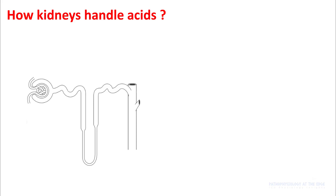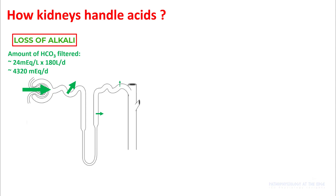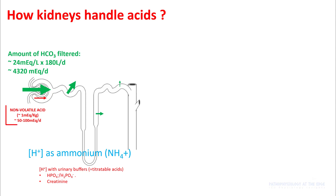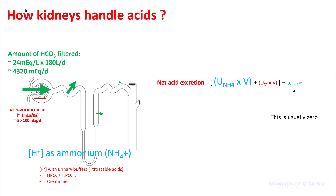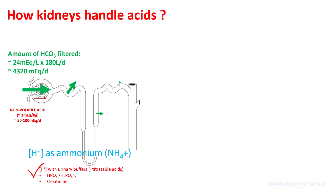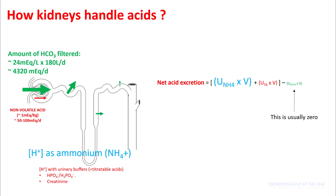Before we do that, let's understand how kidneys handle acid. Normally around 4,000 mL of sodium bicarb is filtered every day and most of it is reabsorbed. You also have around 50 to 100 mEq of non-volatile acid produced in your body that needs to be removed. To get rid of these extra non-volatile acids, your body uses two methods — ammonia and titratable acids like phosphoric acid — to get rid of hydrogen ions. In mathematical form, your net acid excretion is the amount of ammonia plus titratable acid minus the amount of bicarb lost in the urine. Since there's hardly any bicarb lost in the urine, that's approximately zero, so net acid excretion is essentially the sum of ammonium and titratable acids.